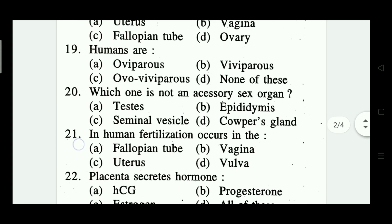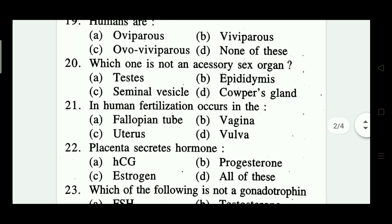Question number twenty: which one is not an accessory sex organ? Options: testes, epididymis, seminal vesicle, and Cowper's gland. Which one is correct? Option A — testes is the correct answer.